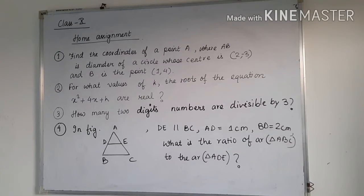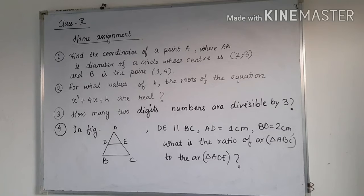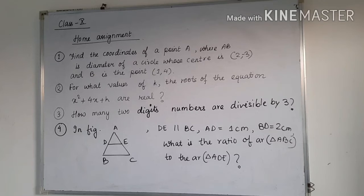Here the question one is: find the coordinates of a point A where AB is the diameter of a circle whose center is (2, -3) and B is the point (1, 4). That means the diameter of a circle is placed in Cartesian plane. The circle is placed in Cartesian plane. Then the endpoints of the diameter are A and B where the coordinate of A is not given, you have to find it. But coordinate of B is given and the coordinate of center point is given. You have to find the coordinate of A. So you have to apply what? Section formula, or you can say the special case of section formula that is midpoint formula. So try to do it.